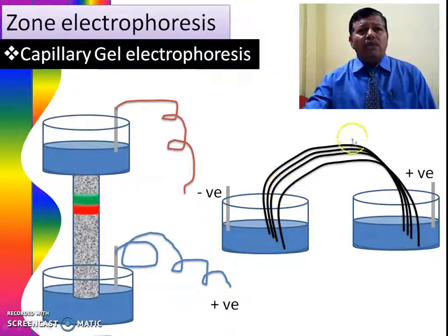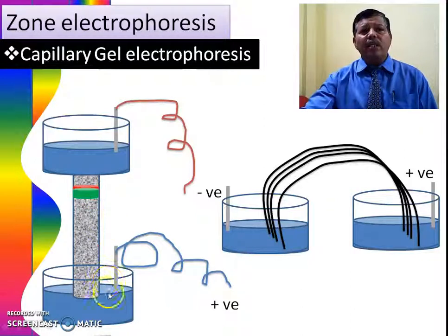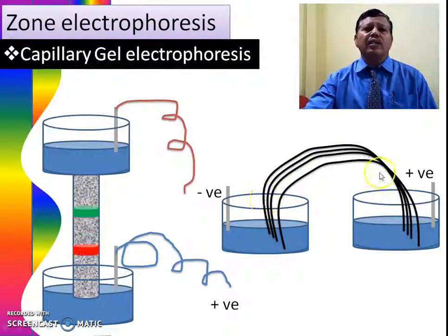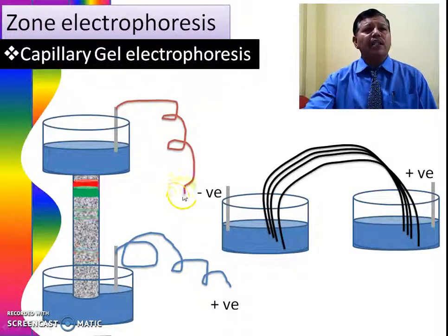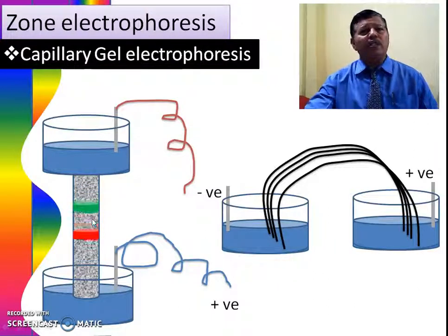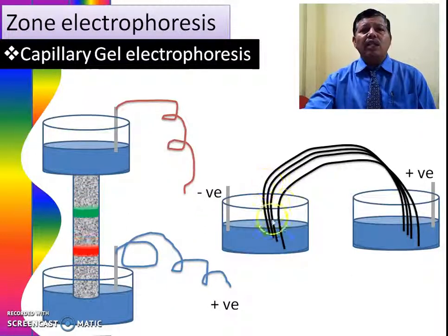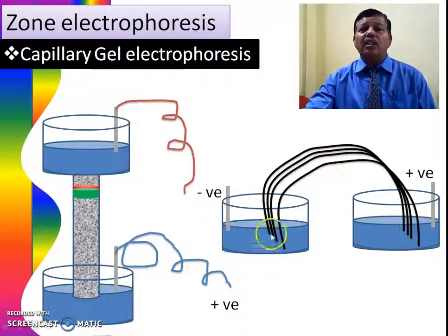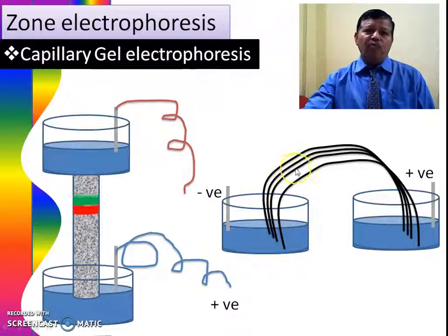In capillary gel electrophoresis, there are two configurations: vertical capillary and horizontal capillary. In the vertical capillary setup, the capillary is connected to two solutions and to a negative and positive electrode. Negative ions like proteins move towards the positive electrode — some proteins have higher speed and some lower — and according to this principle they get separated. In the horizontal capillary configuration, a number of capillaries can be used simultaneously in the same solution, and these capillaries separate the components from one another very easily.